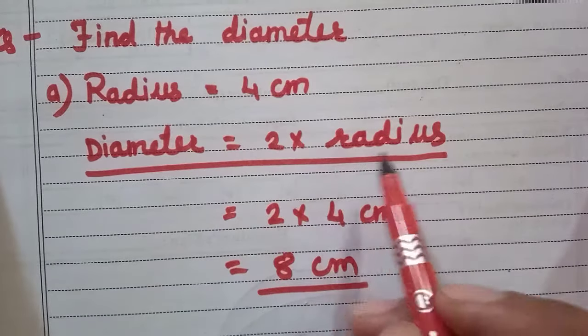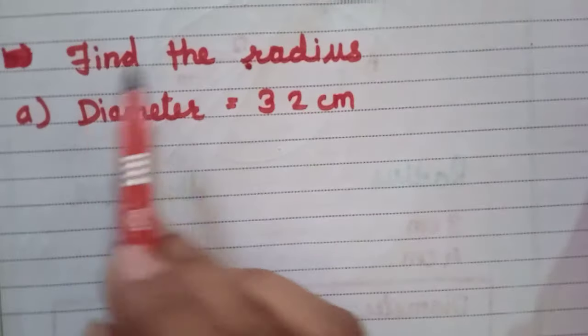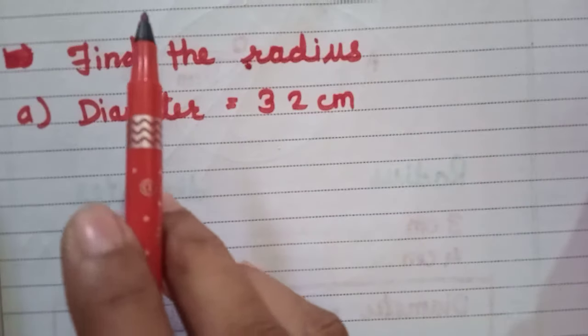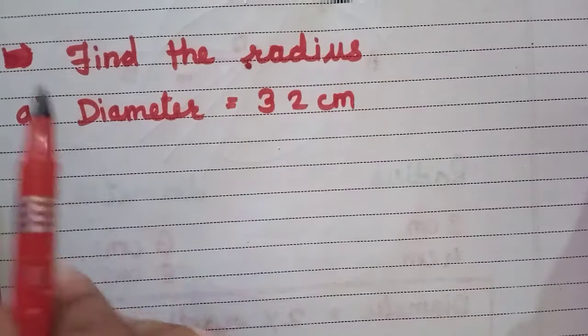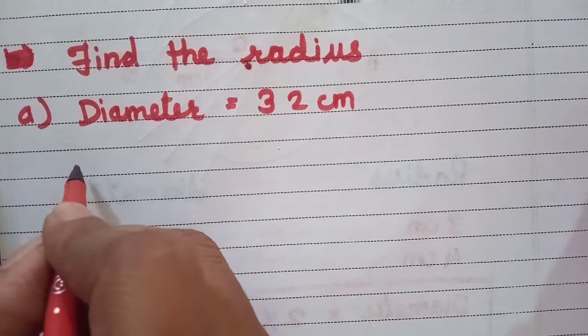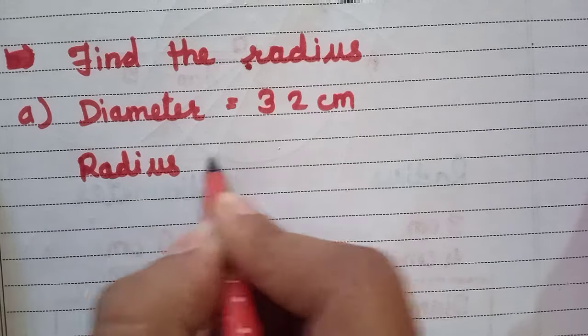So your next question is find the radius. In our previous question we found the diameter. Now find the radius. There is also one formula for finding radius: radius is equal to diameter divided by 2.